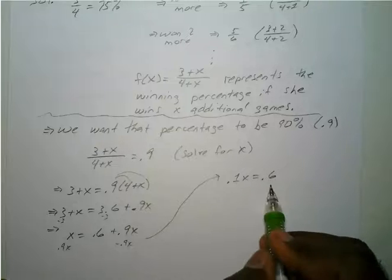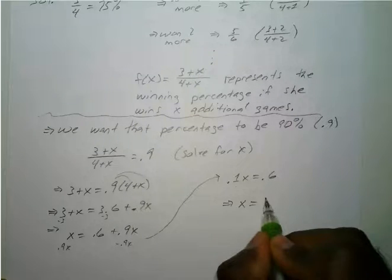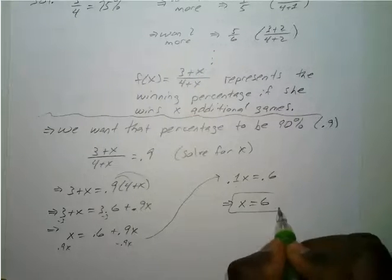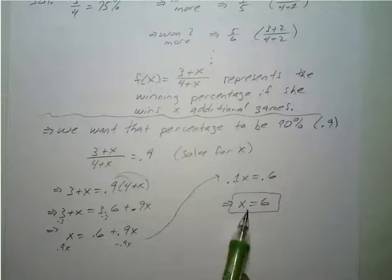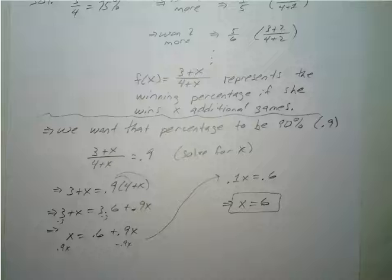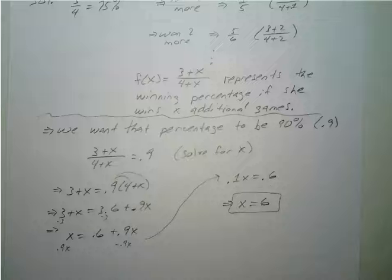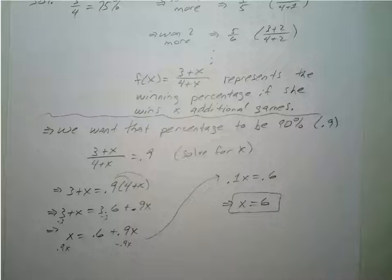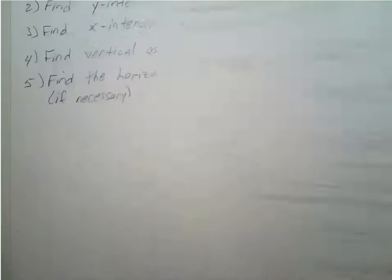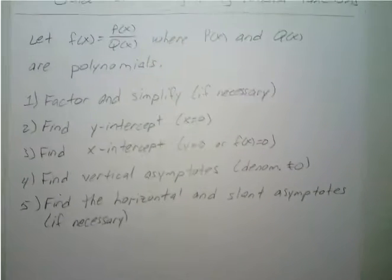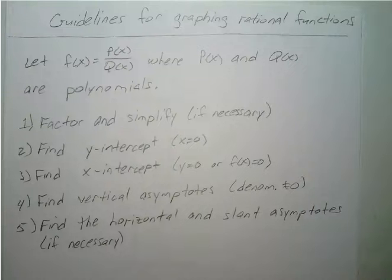Dividing both sides by 0.1, we get x equals 6. So she would need to win 6 more consecutive matches to reach her 90% goal. We're going to move on to our next part, which covers guidelines for graphing rational functions.